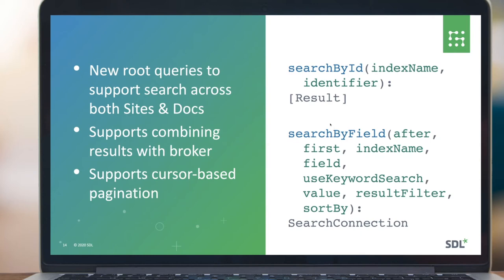All of our search features now include full cursor-based pagination, to align with how GraphQL generally deals with large numbers of results. Rather than page-based pagination — page one, page two, page three — we use cursor-based pagination: you ask for a specific number of results in your request, and after the results are returned it gives you a pointer to the next chunk. The reason this is useful is that if content is being republished whilst you're searching, your pages don't go out of sync — you're always getting a consistent set of results as you page through your search results.